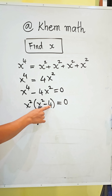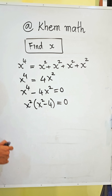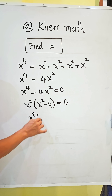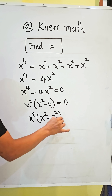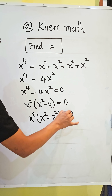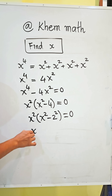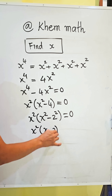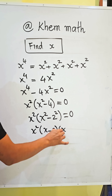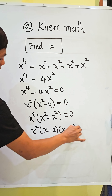We can write 4 as 2 square, so we get x square times x square minus 2 square equals 0. Applying the difference of squares, we get x square times x minus 2 times x plus 2 equals 0.